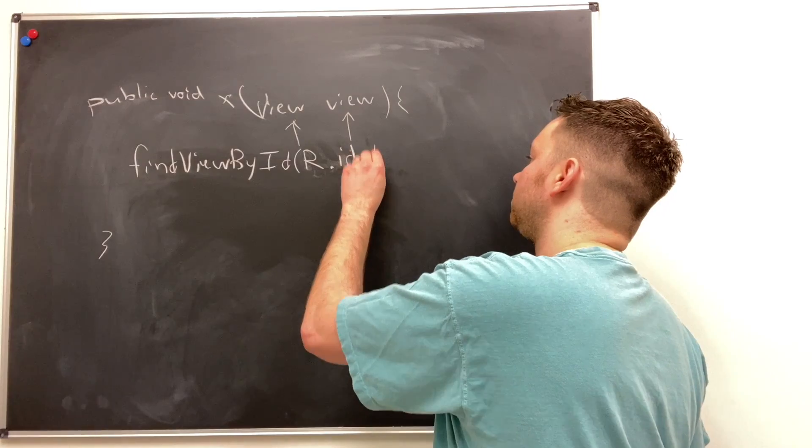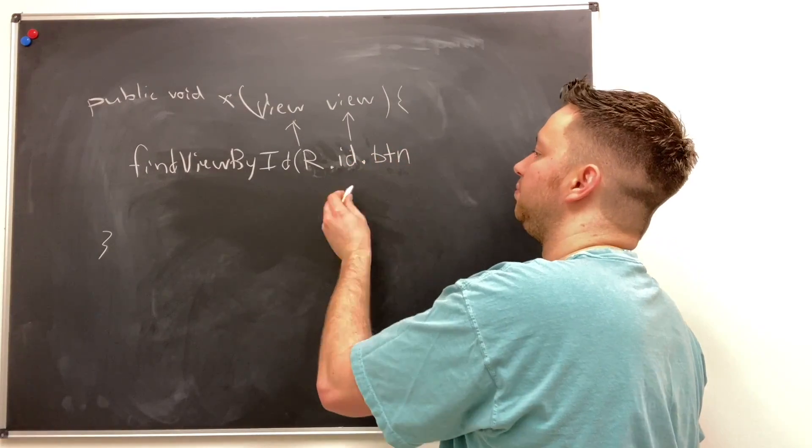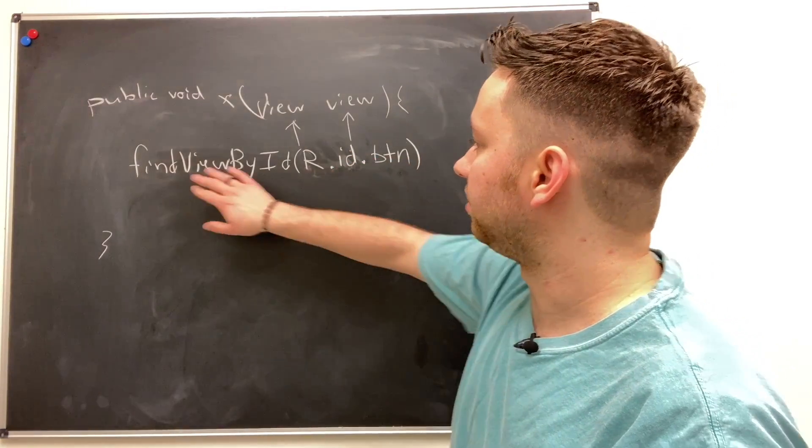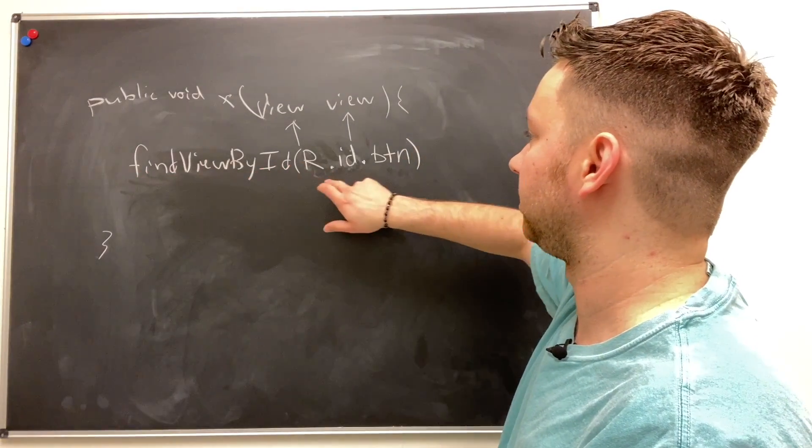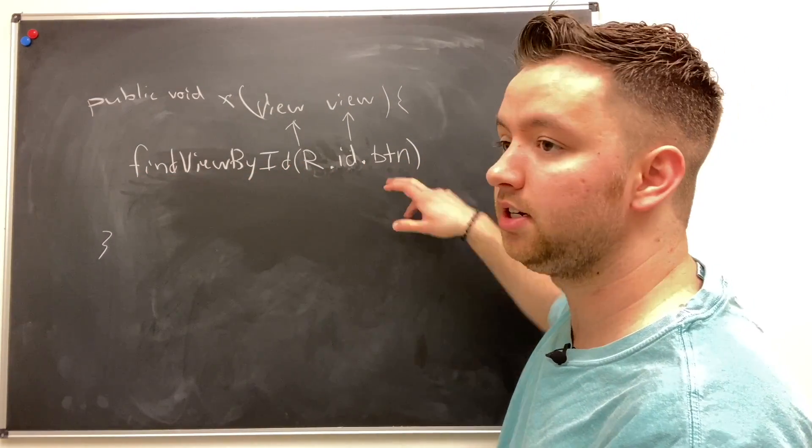So for example we could have named it BTN for button. Now this here, this whole thing find view by ID and then passing R dot ID dot button.